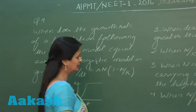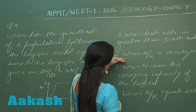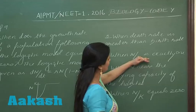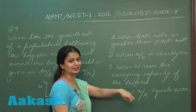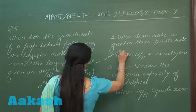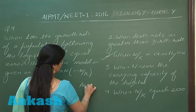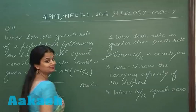...for the right option here. If you look at option number two, when N by K is exactly one, that is when they're the same, then the growth rate becomes zero. So the right answer is option number two.